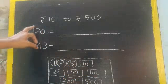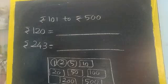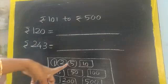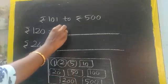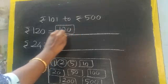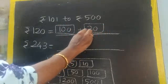Expand this number 120, 100 plus 20. Then check out whether we have the notes. Yes, we have 100 also, 20 also. So we will write 100 plus 20. This is simple.